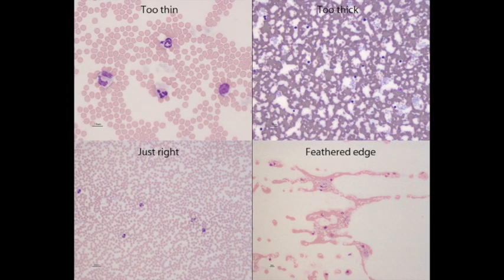This is a microscopic view of what you might see in the fields of view on your slide. In the upper left we see a field of view that is too thin. When it's too thin there's going to be a lot of white space or dead space in between the red blood cells. You typically won't see very many white cells either.